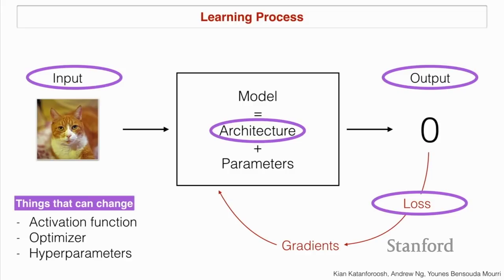In the architecture you can change the activation functions. In this optimization loop you can choose specific optimizers — we're going to see in about three weeks all the optimizers: Adam, stochastic gradient descent, batch gradient descent, RMS prop, and momentum. And finally, all the hyperparameters: what is the learning rate? What is the batch size? There's a bunch of things that can change in this scheme.